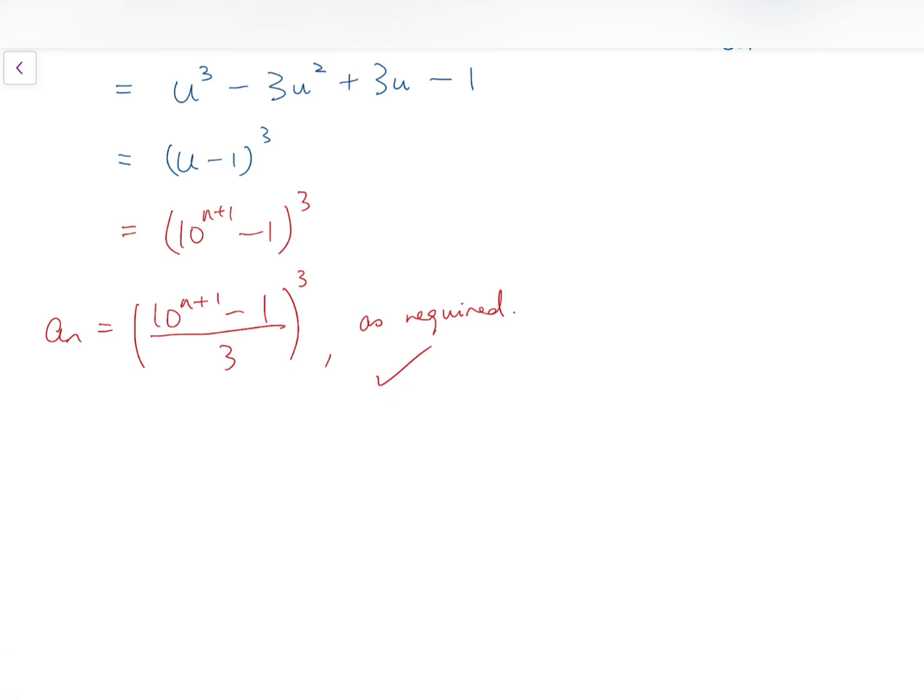Now finally, to show that this fraction, 10 to the power n plus 1, minus 1, over 3, is indeed an integer, it's actually quite easy. Indeed, 10 to the power n plus 1, minus 1, I can say it's congruent to 1 to the power n plus 1, minus 1, mod 3. And then, so it's actually just congruent to 0, mod 3.